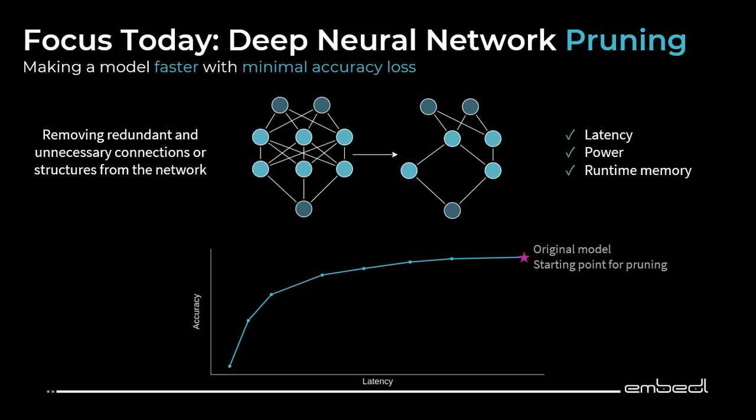So what's pruning? Pruning essentially means removing parts of the network. This could be, for example, unnecessary weights, neurons, or entire structures. And with that, we can reduce the latency, reduce power consumption, and reduce runtime memory. Through pruning, we are able to reduce the latency significantly, with only a small drop in accuracy in most cases.